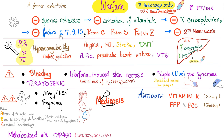Side effects: inhibiting factors 2, 7, 9, and 10 leads to bleeding — that's inherent to being an anticoagulant. Warfarin can also cause warfarin-induced skin necrosis or thrombosis due to the initial hypercoagulation state, because warfarin inhibits protein C, S, and Z before it inhibits factors 2, 7, 9, and 10 — it inhibits the anticoagulants before the procoagulants.